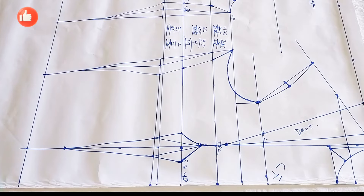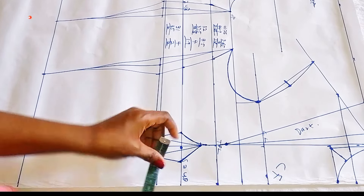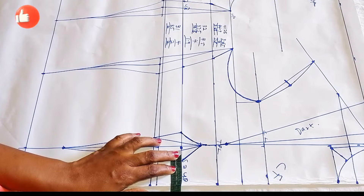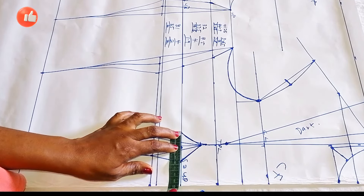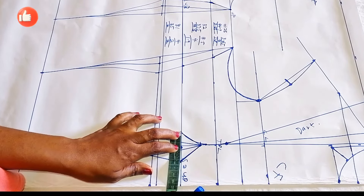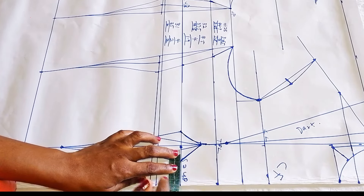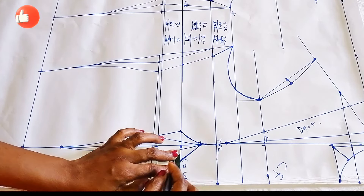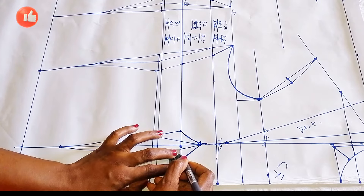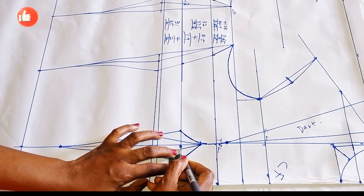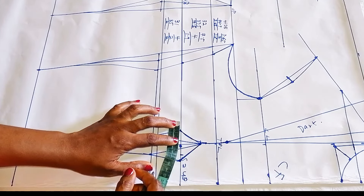Remember on this line we have 2cm, and on this line we also have 2cm. What I'm going to do now is deduct from here — I'm going to deduct 1cm and add that 1cm back on this side.